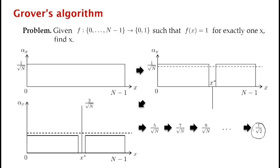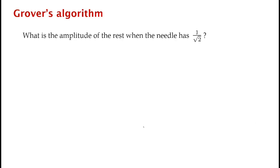All of this was slightly approximate, assuming the mean doesn't decrease much and we really get an improvement of 2 over square root n per step. Let's rigorously justify this. To do so, let's figure out the amplitude of the rest of the elements when the needle has amplitude 1 over square root 2. There is 1 over square root 2 amplitude distributed among n other elements, so each of them has amplitude at least 1 over square root 2n.